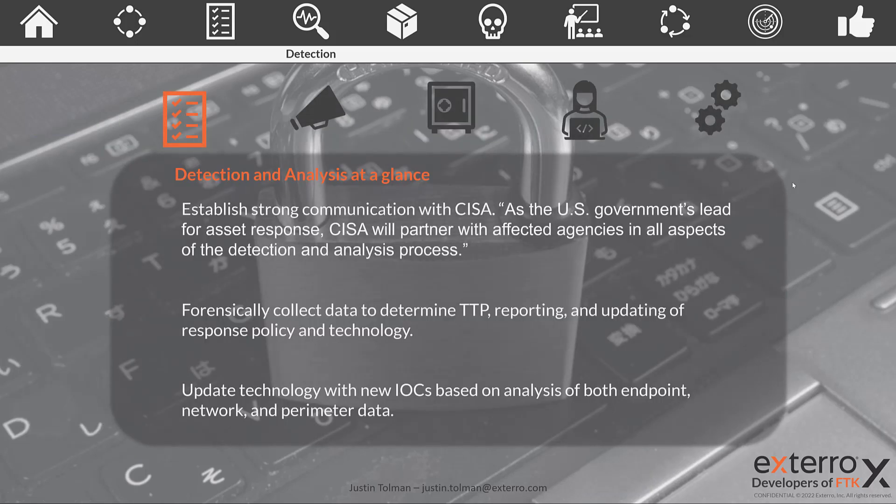Let's jump in and talk about detection and analysis. One of the things CISA focuses on very heavily — and we covered this in the preparation phase — is communication. That is going to be a theme among every phase. All relationships are based on good communication, and it's no different here. We need to have good communication with CISA as the government's lead for asset response. They're going to coordinate these investigations between your company and possibly other agencies, and they will help ensure you have the resources necessary.